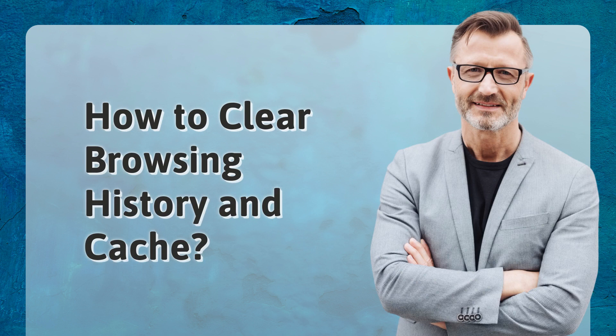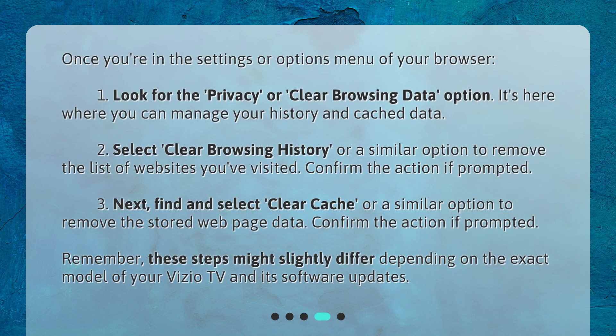How to clear browsing history and cache. Once you're in the Settings or Options menu of your browser, first, look for the Privacy or Clear Browsing Data option. It's here where you can manage your history and cache data. Second, select Clear Browsing History or a similar option to remove the list of websites you've visited. Confirm the action if prompted. Third, find and select Clear Cache or a similar option to remove the stored webpage data. Confirm the action if prompted. Remember, these steps might slightly differ depending on the exact model of your Vizio TV and its software updates.